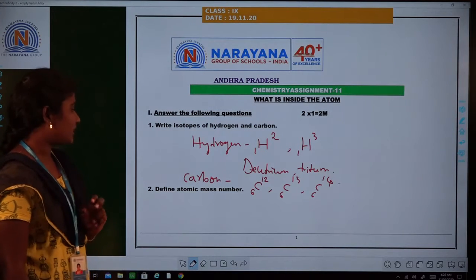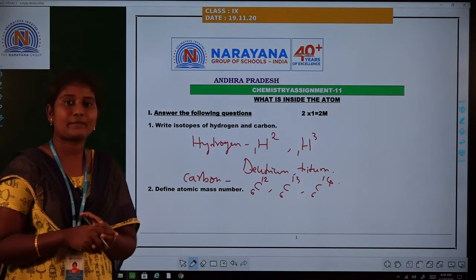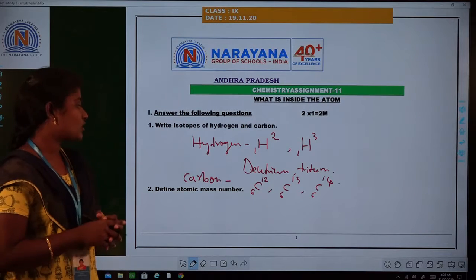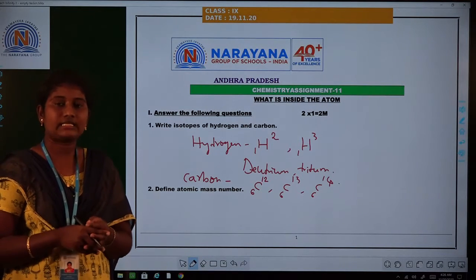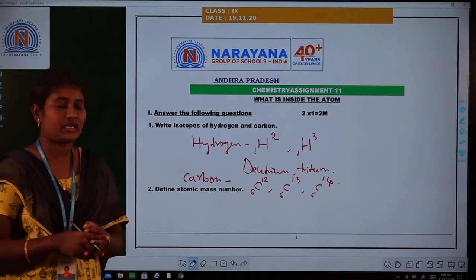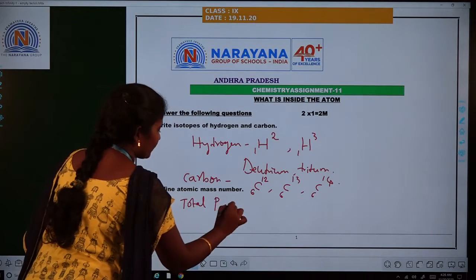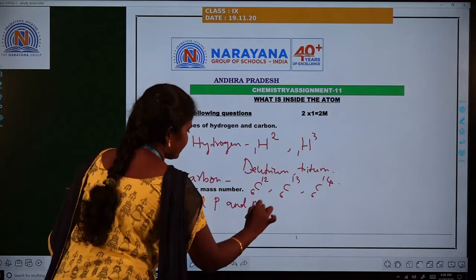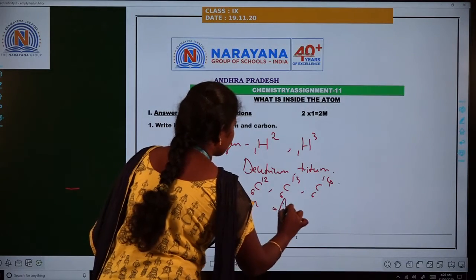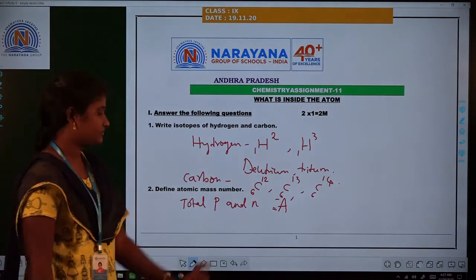See the second question: Define atomic mass number. The atomic mass number is the total number of protons and neutrons. Generally, this atomic mass number is denoted by the letter capital A.